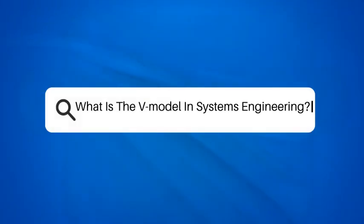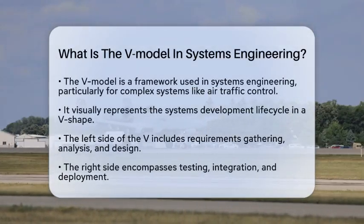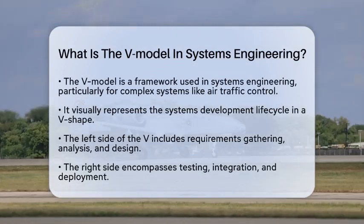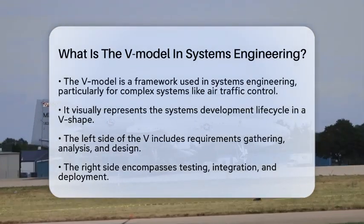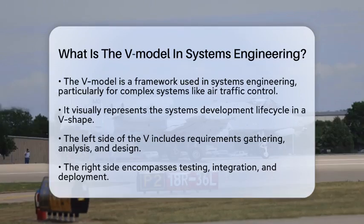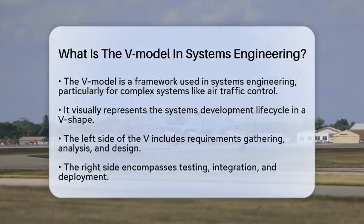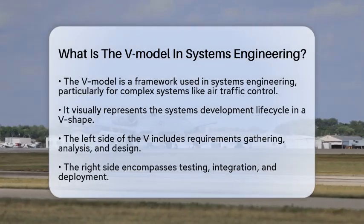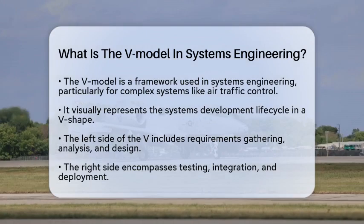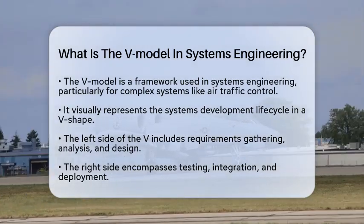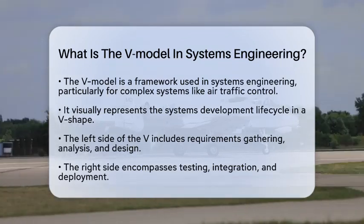What is the V-Model in Systems Engineering? Have you ever wondered how complex systems like air traffic control are developed and managed? One important framework that plays a vital role in this process is the V-Model in Systems Engineering. The V-Model is a graphical representation of the systems development lifecycle, shaped like a V, where the left side represents the initial phases and the right side represents later stages.